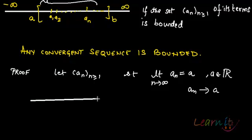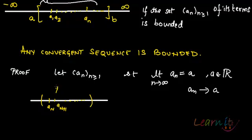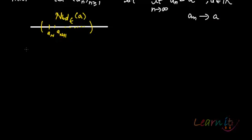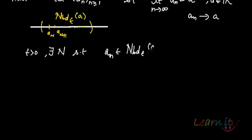What will that actually mean? If I have a real line and on it I create a sequence, I have terms like a_n, a_(n+1), and so on — these terms should be in the epsilon neighborhood of a. That's the meaning of convergence. By convergence, we know that for epsilon greater than 0 there exists a natural number N such that a_n belongs to the epsilon neighborhood of a for all n greater than or equal to N.